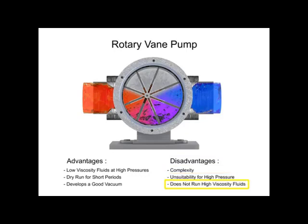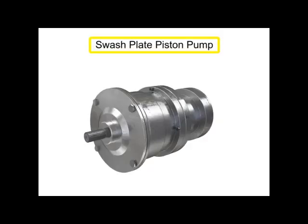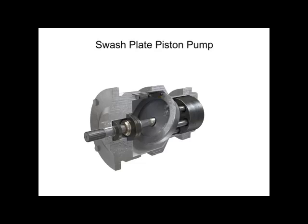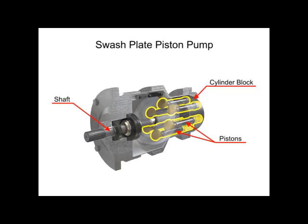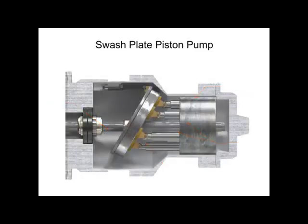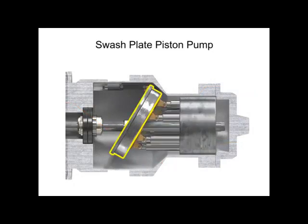Piston pumps come in many different forms. A swashplate is a device used to translate the motion of a rotating shaft into the reciprocating motion of a piston. Swashplate piston pumps have a rotating shaft connected to a cylinder block containing pistons, which are pressed against a stationary swashplate that sits at an angle to the cylinder. As the shaft rotates, the pistons move against the swashplate, causing them to reciprocate within the piston block.